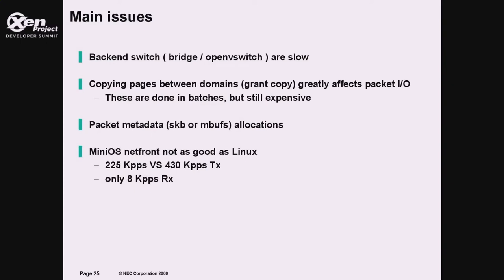The main issues with this pipeline are the following. The backend switch — Linux Bridge or OpenVSwitch — is not prepared to handle really high packet rates, although it can still achieve 10 gigabits by relying on NIC features such as TSO or GRO. For middleboxes, where the switch needs to handle millions of packets per second, this is far from ideal. Regarding backend and frontend communication, packets always need to be copied from the guest to the backend domain, which is one of the main causes of low packet rates. Netback works with packet metadata structures such as SKBs or MBUFs, whose allocation and manipulation are expensive. Also, the MiniOS Netfront is not as fast and featureful as the Linux Netfront — in Linux we get 430,000 packets per second, while on MiniOS the receive path was getting only 8,000 packets per second.